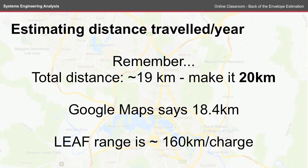When doing back-of-the-envelope estimation, it's always good to go back and justify your assumptions. At the beginning we estimated the distance to and from work at about 19 kilometers, rounded to 20. When I plug the route into Google Maps it reports 18.4 kilometers — a little higher than actual, but a good estimation in the absence of data. Considering the electric vehicle's range is about 160 kilometers per charge, I can easily do the 40 kilometers to and from work each day on a single charge.